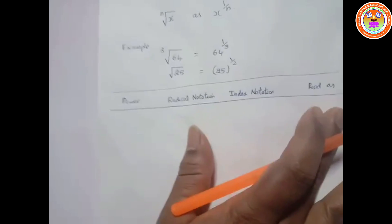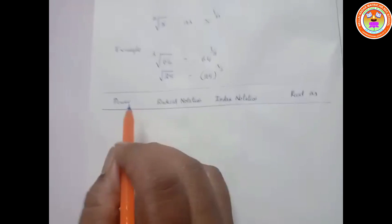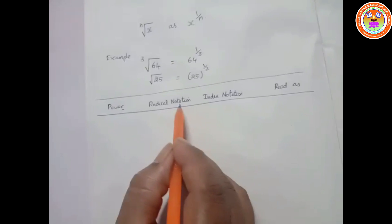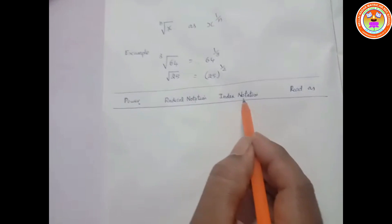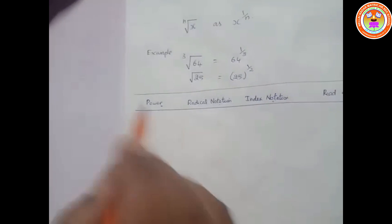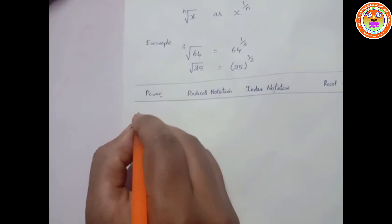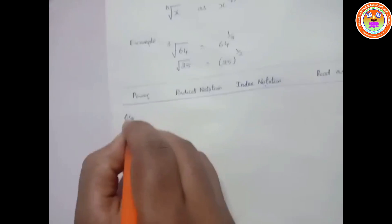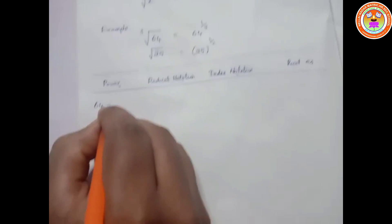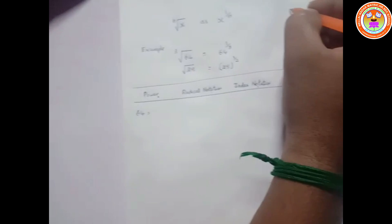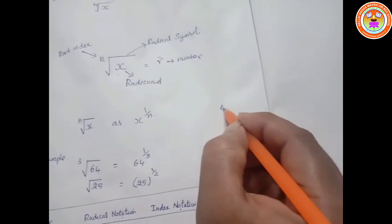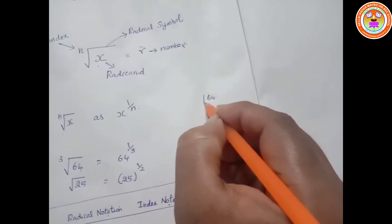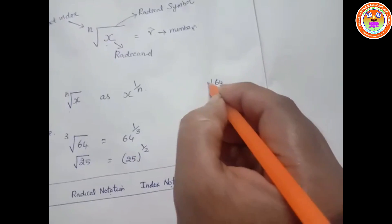Now we will see some more examples using power notation, radical notation, and index notation. Take 64. To write 64 in power notation, first factorize: 64 equals 2 times 2 times 2 times 2 times 2 times 2.